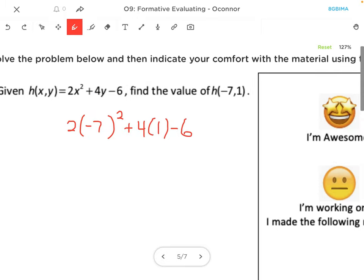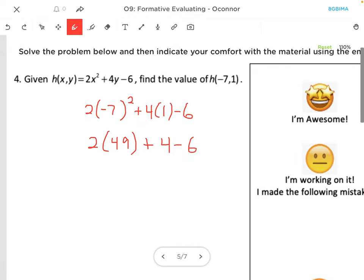Now I do my parentheses first. So negative 7 squared is negative 7 times negative 7, which is positive 49. I'm gonna just rewrite the rest of the part.